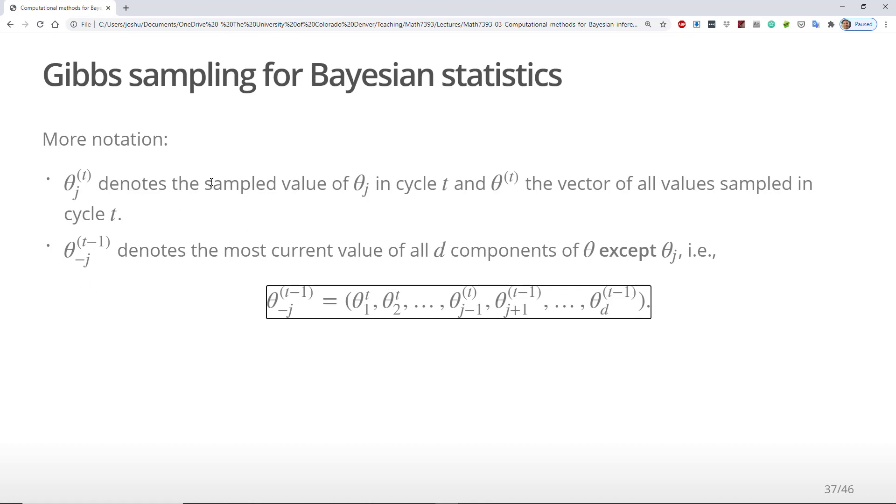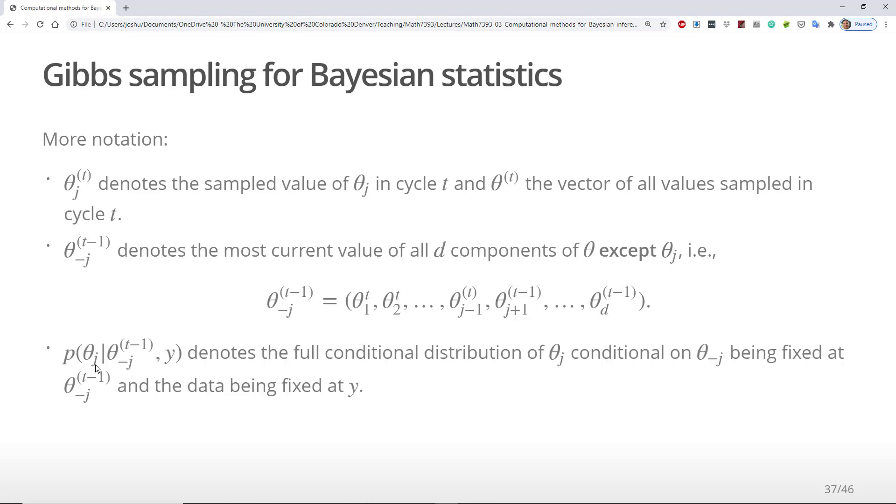Theta minus j with superscript t minus 1 in parentheses denotes the most current value of all d components excluding theta j. This would mean that the first j-1 components have already been updated in the cycle, but the remaining components after theta j still need to be updated. P of theta j given theta minus j superscript t minus 1 and the data will denote the full conditional distribution of theta j, conditional on theta minus j being fixed at theta j superscript t minus 1 and the data being fixed at y.